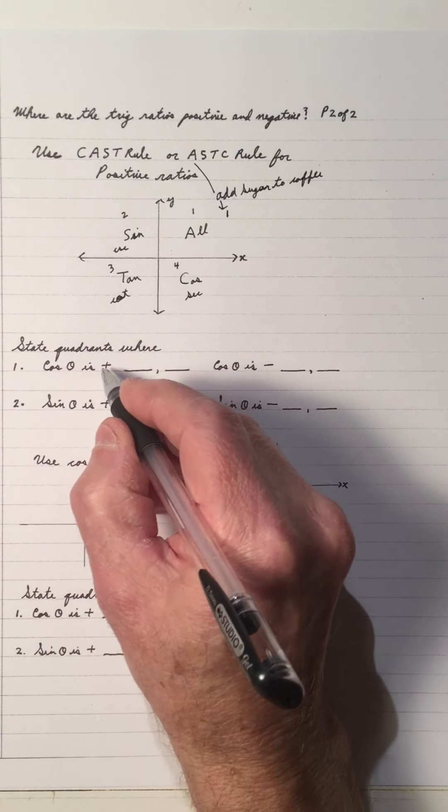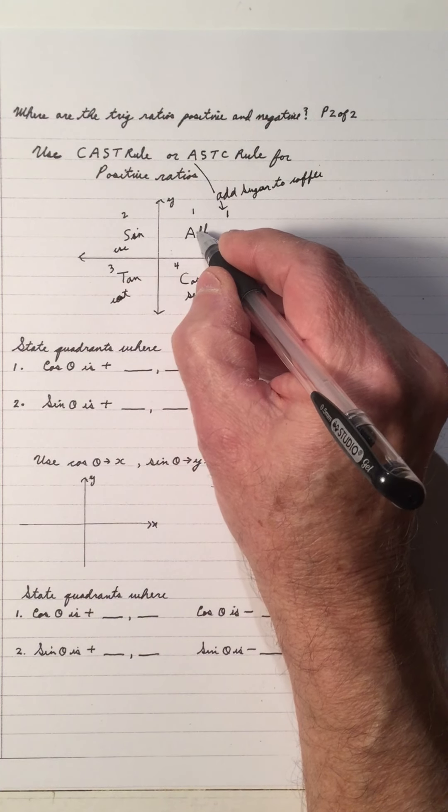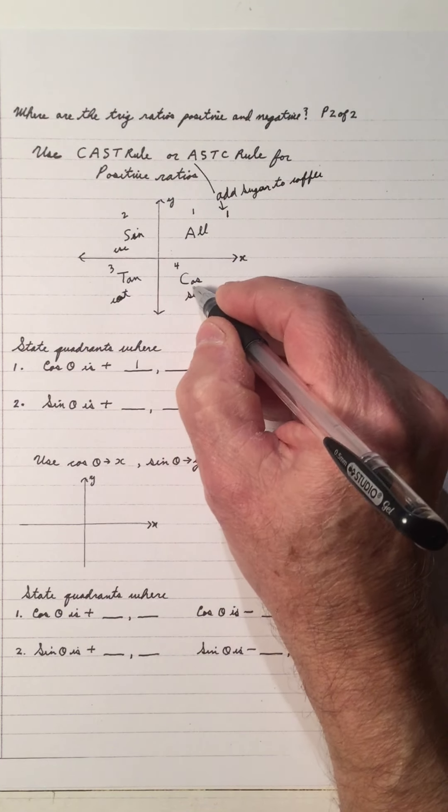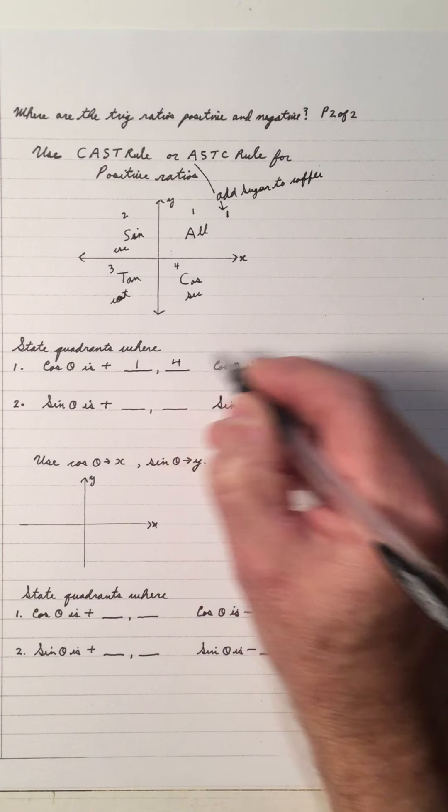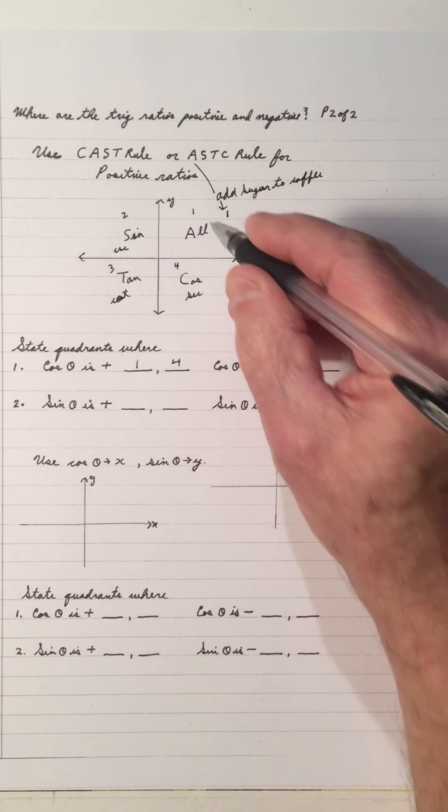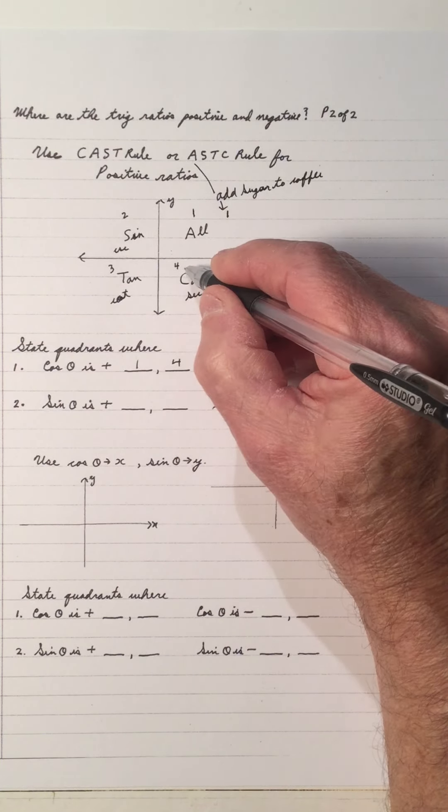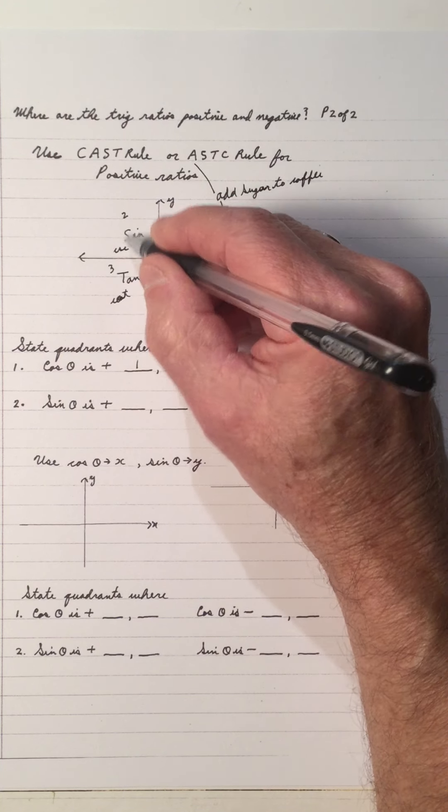So cos is positive in 1, because they're all positive, and in 4. Cos is negative. If cos is positive in 1 and 4, it must be negative in the other ones, 2 and 3.